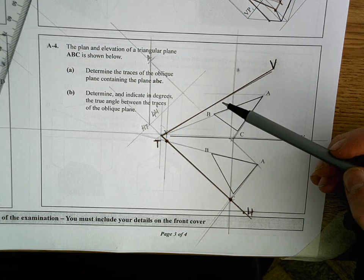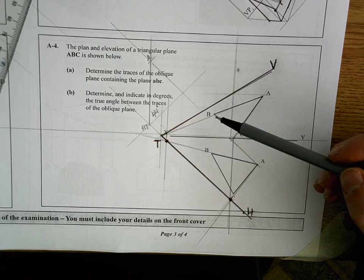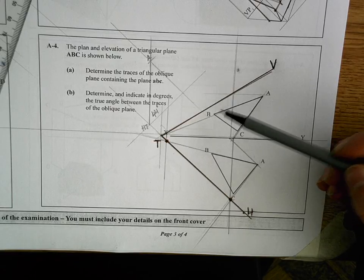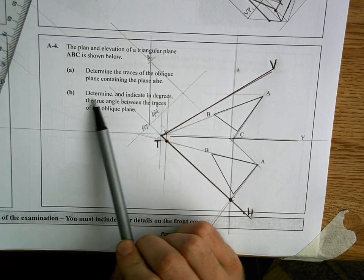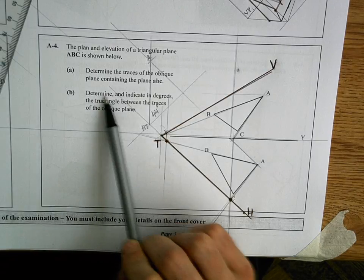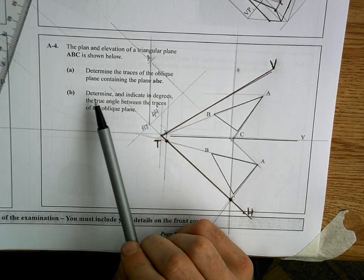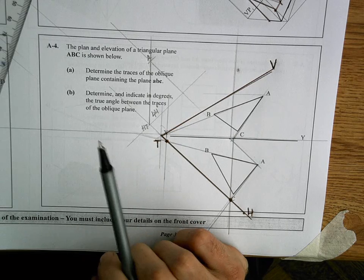And that's part A of that question complete. So that's the kind of thing that's coming up all the time. That'll be in your section B as well. The second part of that, which might throw some of you off, but it's very straightforward. They're asking you to indicate in degrees the true angle between the traces of the oblique plane.